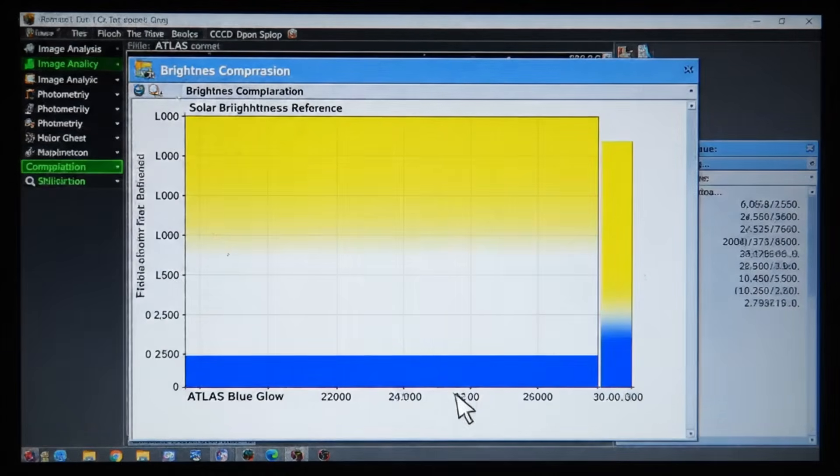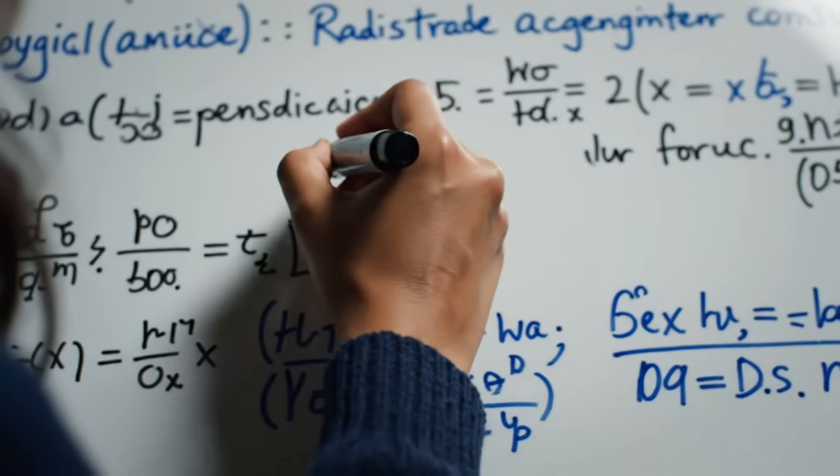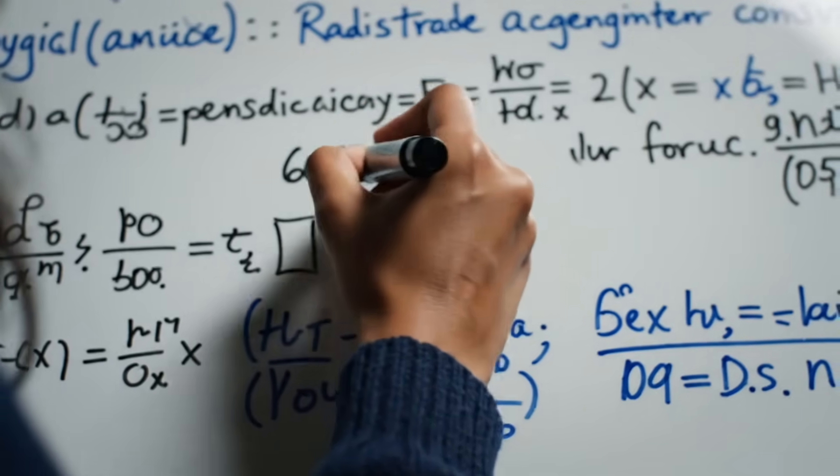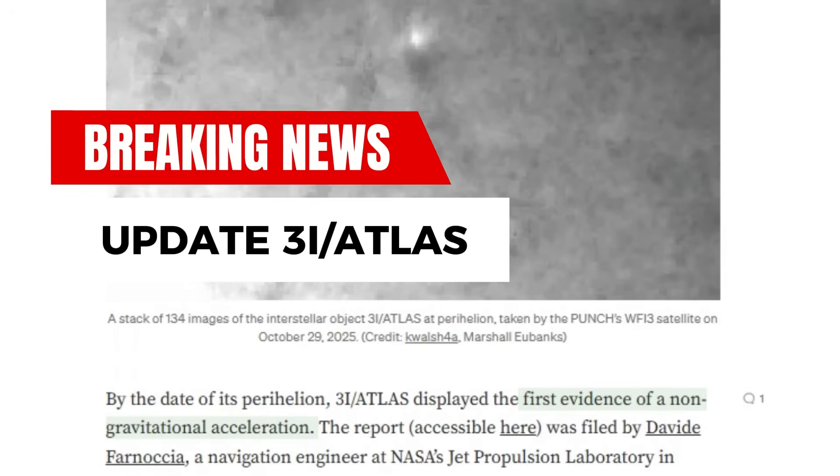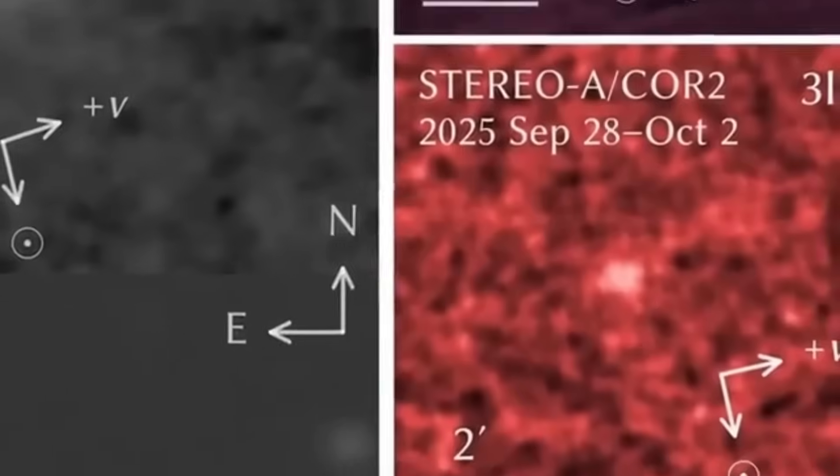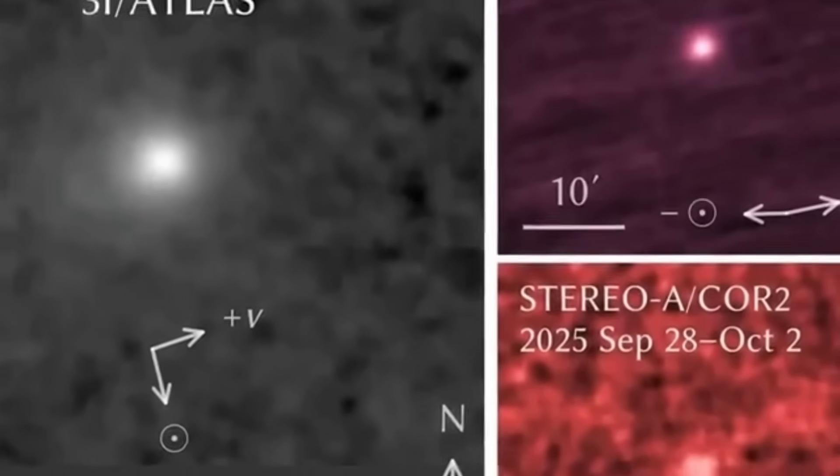According to Loeb, this is just the latest evidence that Atlas is not behaving like any natural object we know. This leads us to a fundamental question that science needs to seriously address. There has been a lot of misinformation and alarmism about Atlas and its acceleration. In this video, we're going to analyze the real data and find out if this could really indicate something extraordinary observing our solar system.